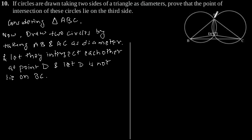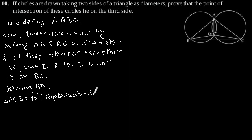Now, by joining AD, we can say that angle ADB is equal to 90 degrees, as it is an angle subtended by semicircle.